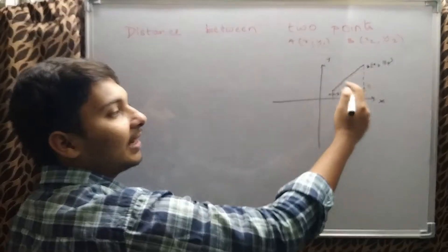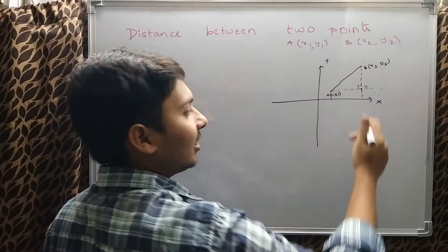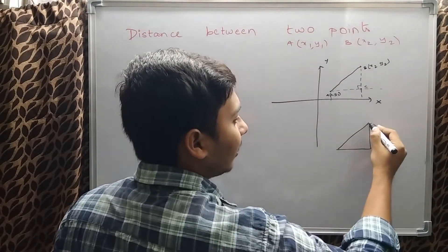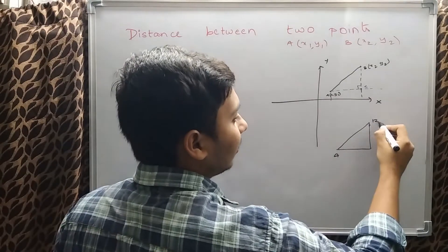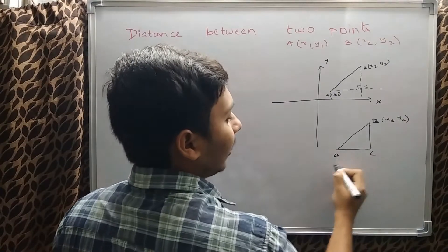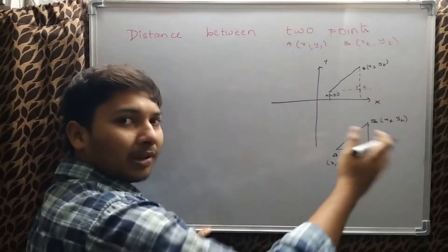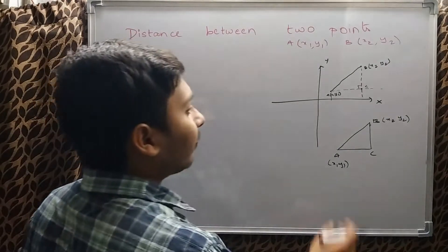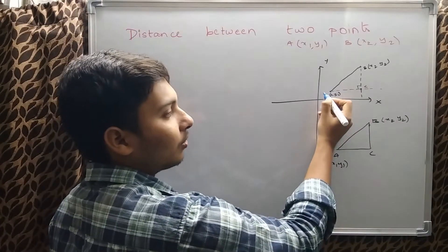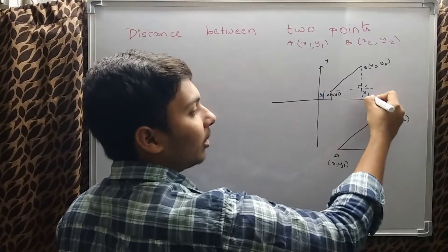This forms a right angle triangle ABC. In triangle ABC, point B is (x2, y2) and point A is (x1, y1). This point C has coordinates, and this length becomes y1 units.